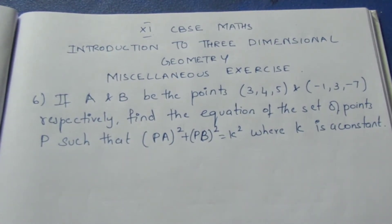If A and B be the points (3, 4, 5) and (-1, 3, -7) respectively, find the equation of the set of points P such that PA square plus PB square equal to K square, where K is a constant.